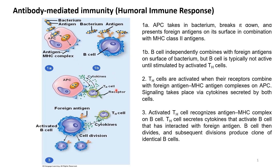T-helper cells will recognize the complex and will bind to it via its T-cell receptor. The binding causes the APC to release cytokines to the T-helper cells. The T-helper cells will release cytokines to itself and it will be activated, and will therefore be known as activated T-helper cells.